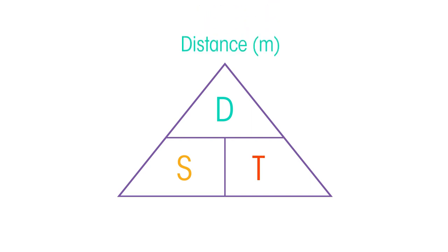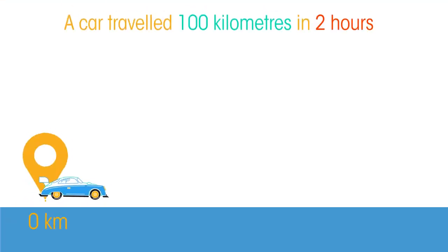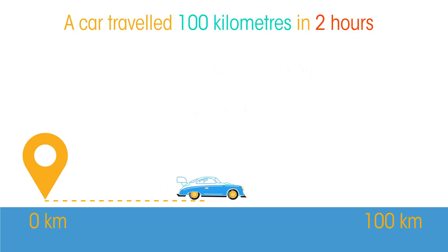The standard units of distance is meters and time is seconds. Because of this, speed is measured in distance per time, for example meters per second or kilometers per hour. Let's look at an example: a car traveled 100 kilometers in two hours. What was its speed?